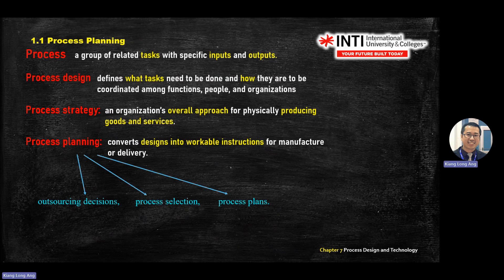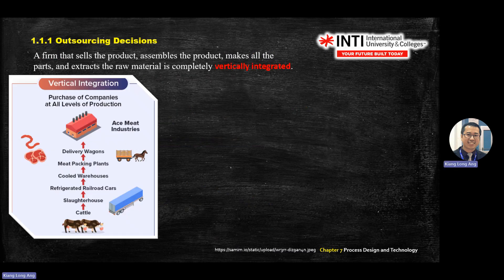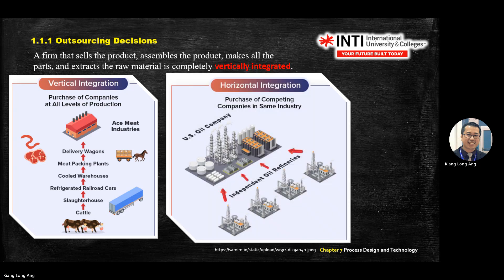Vertical integration means a firm that sells products, assembles the product, makes all the parts, and extracts the raw material completely — from cow to raw beef slice, for example. Horizontal integration, seen in oil and gas, means working in parallel — each workstation fits into a silo, and you purchase competing companies in the same industry.